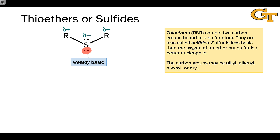As we saw for ethers, the carbon groups linked to the thioether sulfur have the potential to act as electrophiles and accept electrons with cleavage of the carbon-sulfur bond. But typically this only occurs after the formation of positive formal charge on the sulfur atom, turning it into a pretty good leaving group.